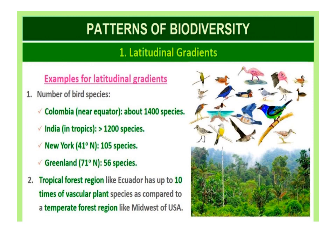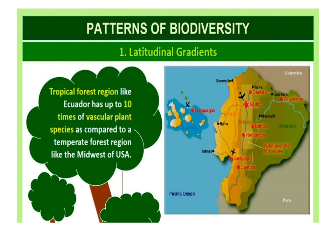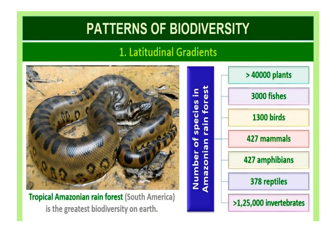Tropical forest regions like the Yucatan have up to 10 times the vascular plant species compared to temperate forest regions like the Midwest of USA. India, with much of its land area in the tropical latitudes, has more than 1,200 species of birds. The Amazon rainforest in South America has the greatest biodiversity on Earth, harboring about 40,000 species of plants, 1,25,000 species of insects, 3,000 species of fishes, 1,300 of birds, 427 of mammals, 427 of amphibians, 378 of reptiles, and more than 1,25,000 invertebrates.